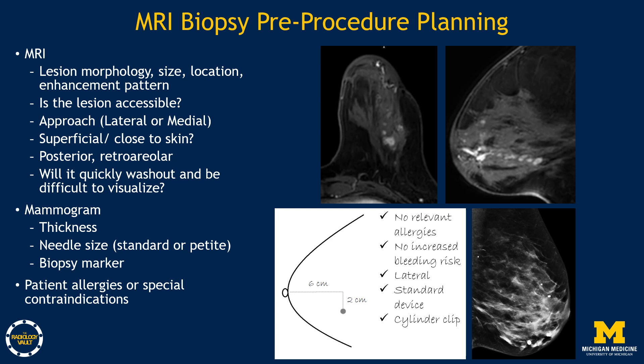The first step for an MRI-guided breast biopsy is pre-procedural planning to ensure success on the day of biopsy. I first review the MRI and familiarize myself with the lesion morphology, its size, location, and enhancement pattern, and try to determine how accessible the lesion will be to biopsy. MRI-guided breast biopsies are performed with the breast in compression in a medial-lateral fashion, so the options for approach are only lateral or medial. It is typically easier to access the breast from a lateral approach, so that is usually the preferred approach. Lesions that are superficial or close to the skin, in the far posterior or retroareolar breast, can be challenging to access and biopsy. Lesions that will wash out quickly may become less conspicuous as the procedure progresses.